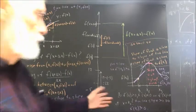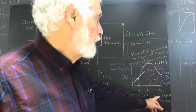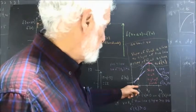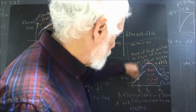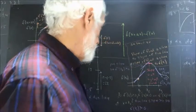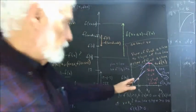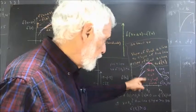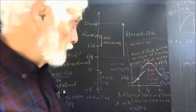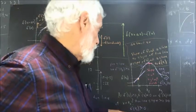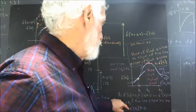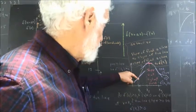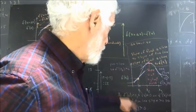Now we ask some questions. Is f prime of x greater than zero, less than zero, or equal to zero at x equals x1? At x equals x1, the graph point is here and the tangent line looks like this purple tangent line. We conclude that tangent line has a positive slope because if we have a positive run, we'll have a positive rise — so rise over run is positive. If the slope of the tangent line is greater than zero, then f prime of x1 is greater than zero. The slope of the tangent line is greater than zero here, so f prime of x1 is positive.